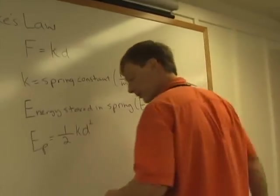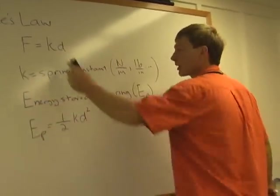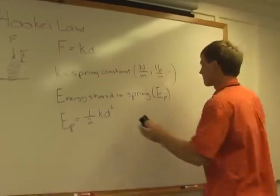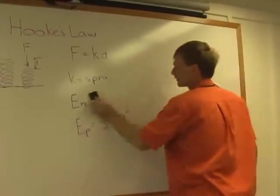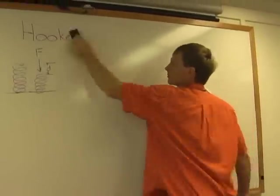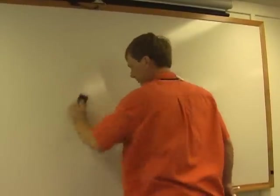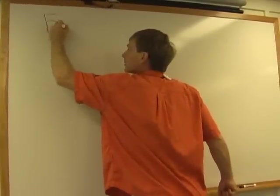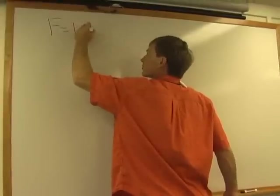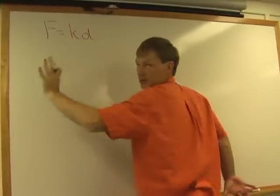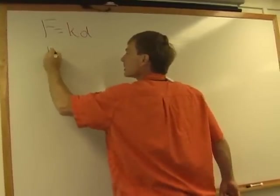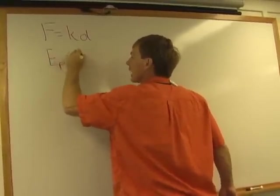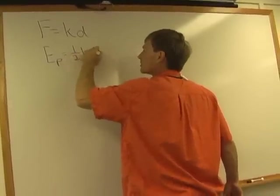All right. So we should do an example. So let's do that. I'll write these equations down again so we can see them and we'll work with them. There's Hooke's Law. The force is the spring constant times the displacement, whether it's stretched or compressed. The potential energy stored in the spring is one-half times the spring constant times the displacement squared.